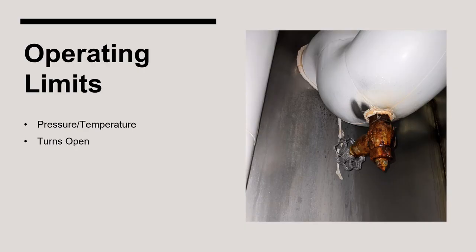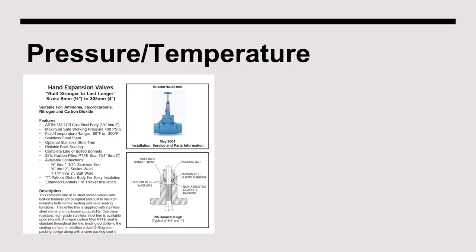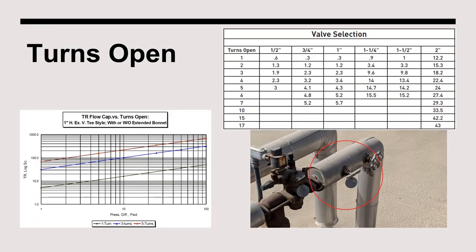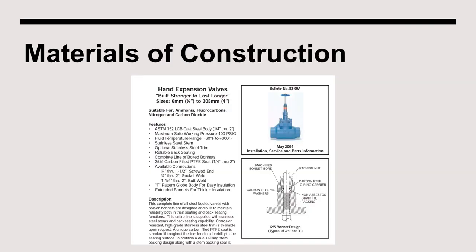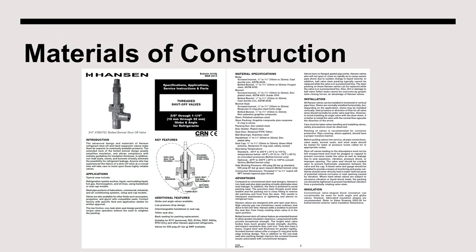We will review the operating limits of valves in terms of rated pressure, temperatures, and turns open of hand expansion valves. The maximum working pressure and operating temperature ranges are provided by the manufacturer in product bulletins and brochures. For example, one valve has a maximum safe working pressure of 400 PSIG. Manufacturers also provide charts and graphs describing flow rate in terms of tons of refrigeration versus number of turns open. The same bulletins and brochures also communicate the materials used to manufacture the valves.